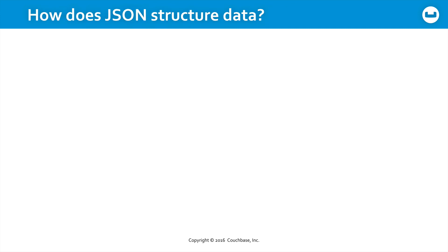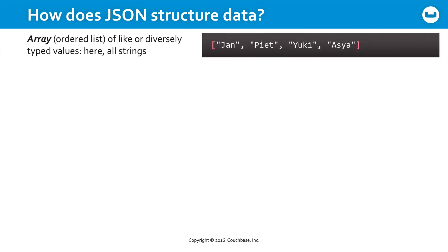So let's take a look at how you structure data in JSON. First, the array, or ordered list, may have like or diversely typed values within it. In this example, it's all strings. Notice each string is separated by a comma. There is no comma after the last string. It's wrapped in braces, and in this case double quotes are being used, although it could be single quotes. The target coding environment would determine whether or not that made any particular difference.